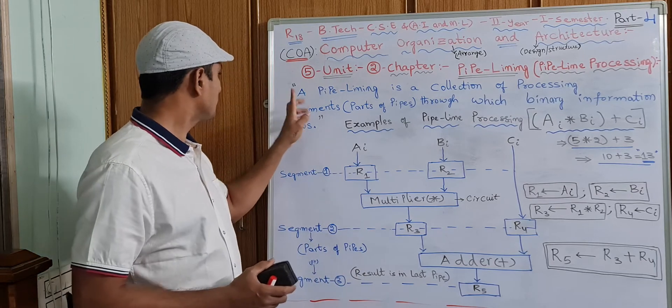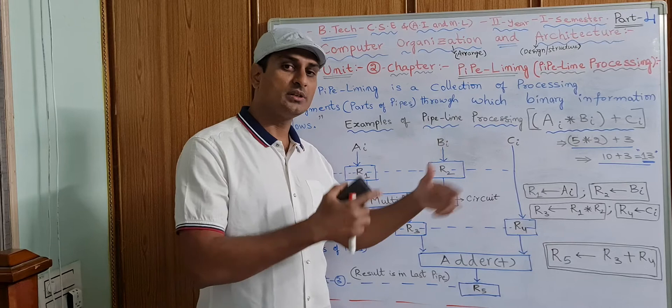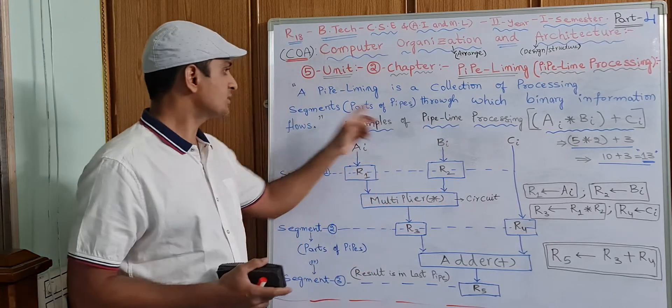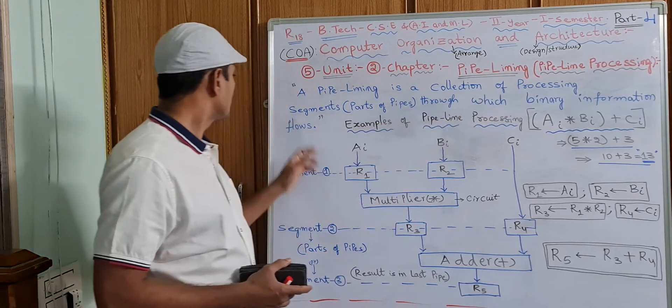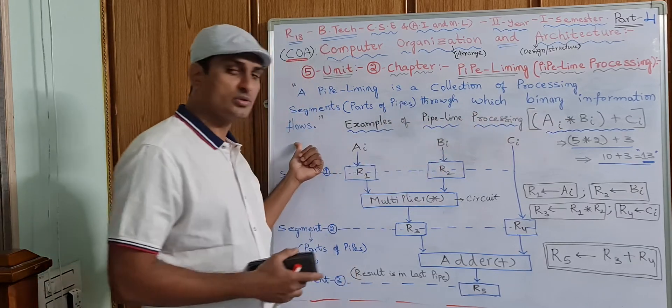The definition goes something like this: A pipelining is a collection of processing segments, parts of pipes, through which binary information flows.